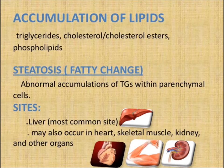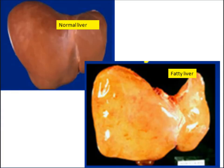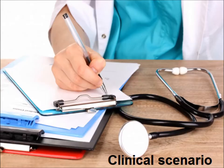Steatosis, or fatty change, refers to abnormal accumulations of triglycerides within parenchymal cells. The most common site is the liver, but it may also occur in the heart, skeletal muscle, and kidney. Normally the heart is brown and meaty in color. When there is increased triglyceride deposition, the liver is enlarged in size, yellowish in color, and has a greasy look and feel.